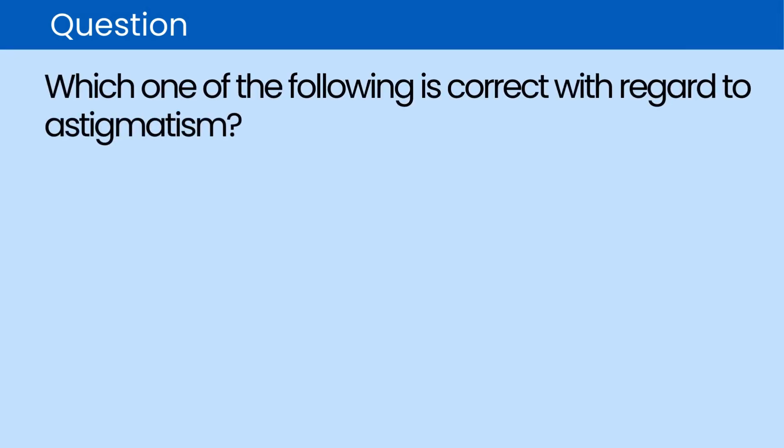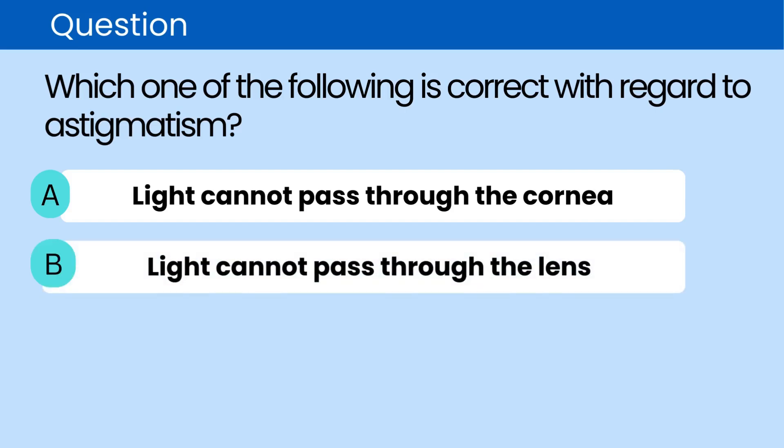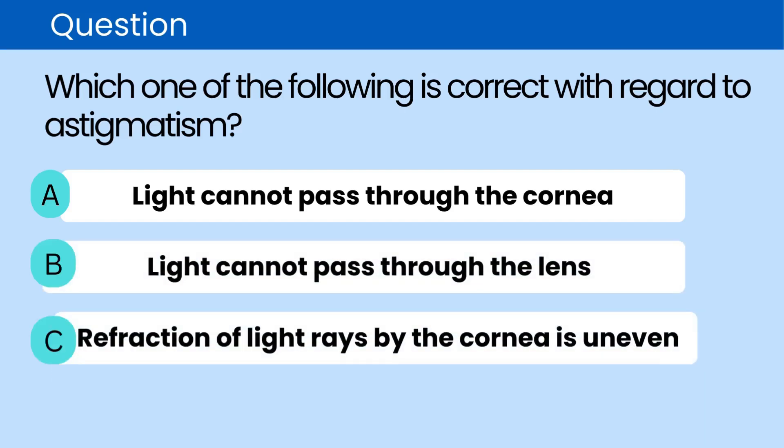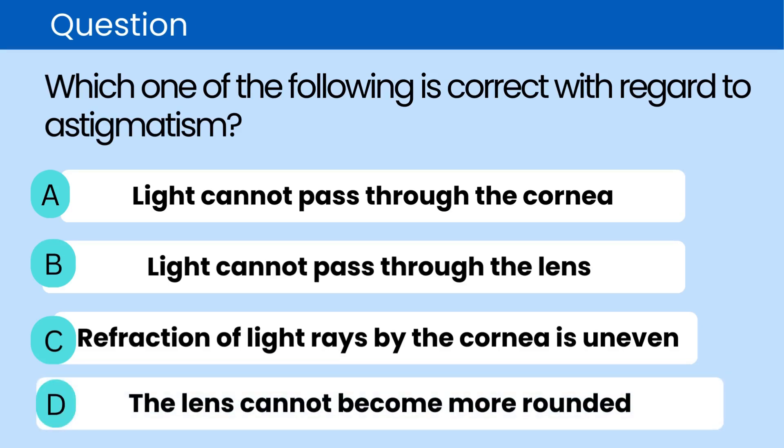Question. Which one of the following is correct with regard to astigmatism? A. Light cannot pass through the cornea. B. Light cannot pass through the lens. C. Refraction of light rays by the cornea is uneven. D. The lens cannot become more rounded.